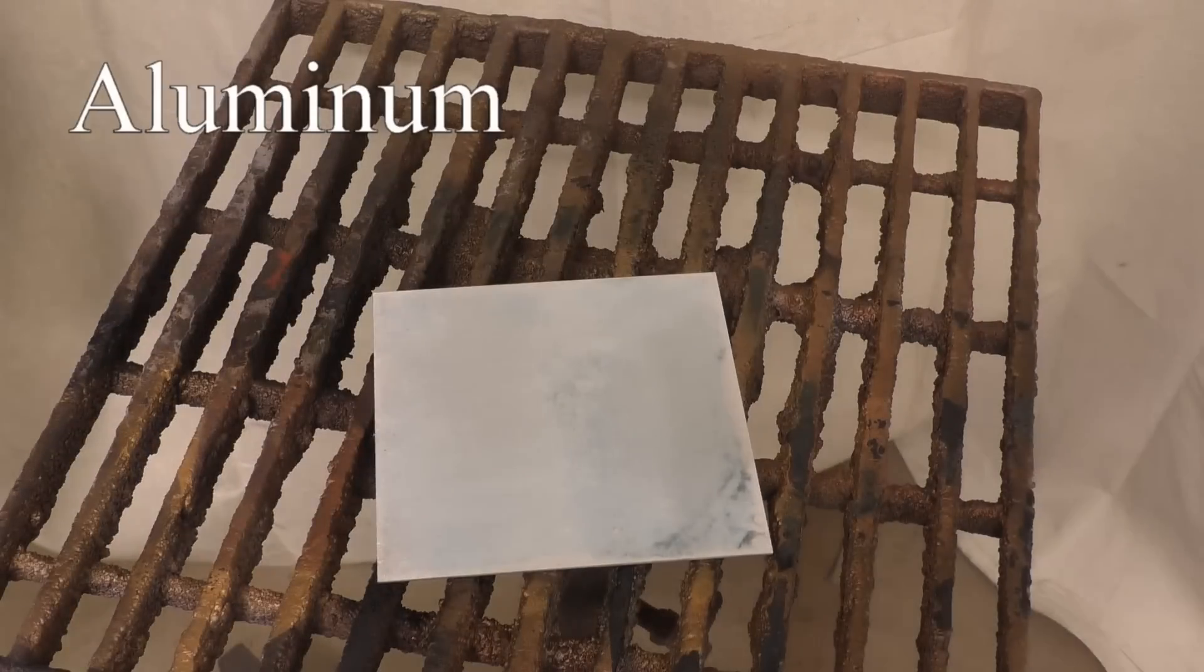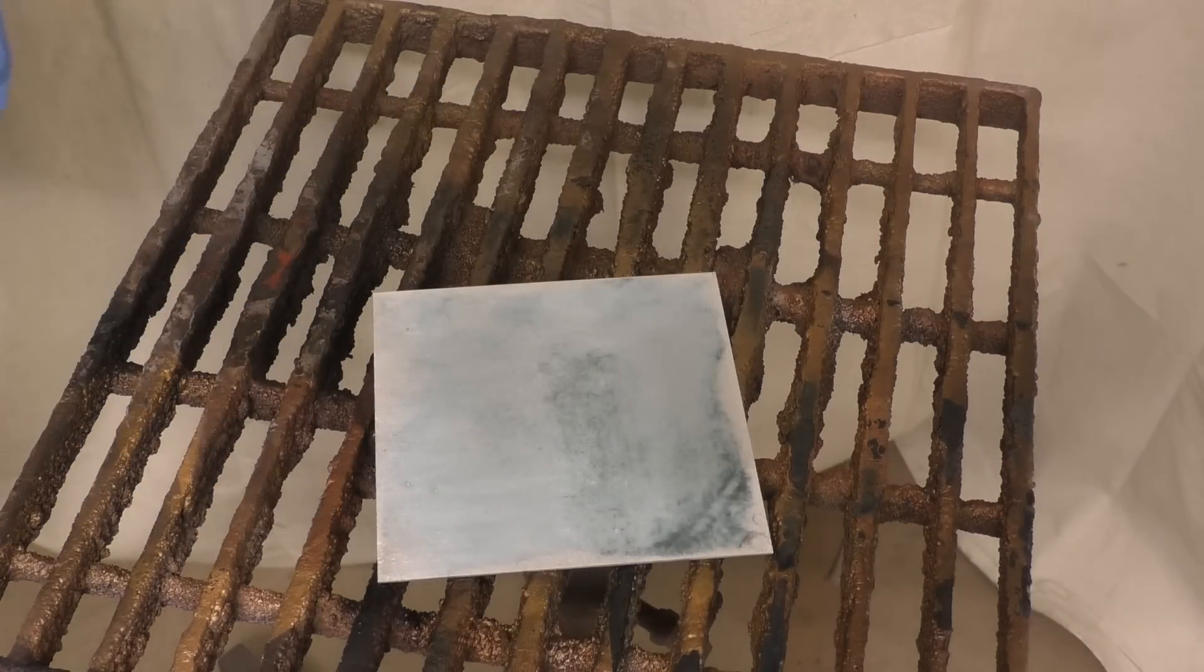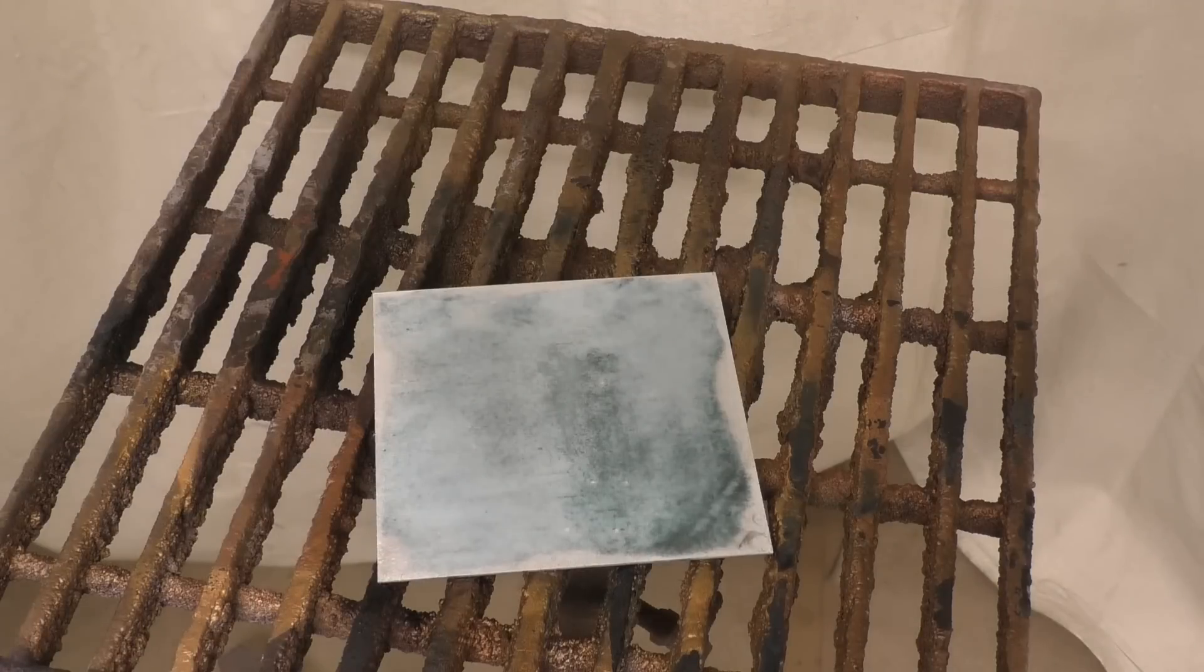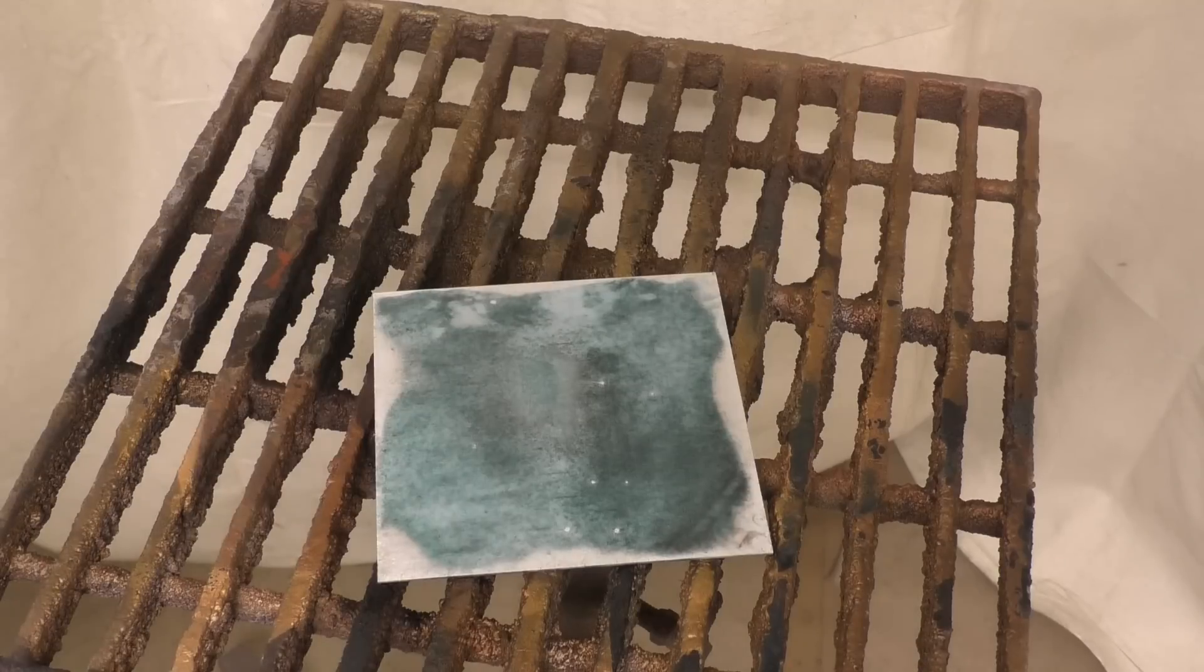From steel we're going to move on to aluminum. Aluminum doesn't like to react with a lot of stuff, so M20 is one of those that it'll kind of work, but you've got to know what you're getting into. Definitely do a test sample because as you can see it's really not wanting to react around the edges.